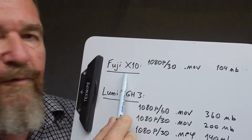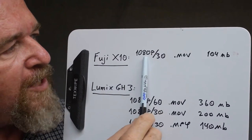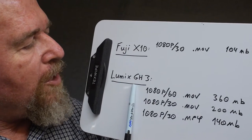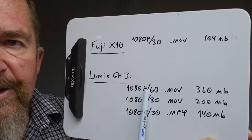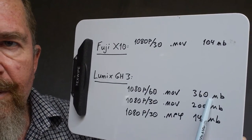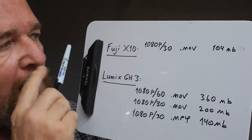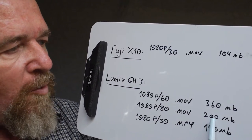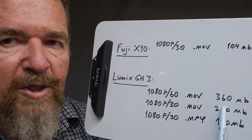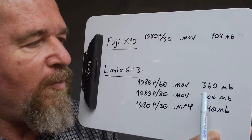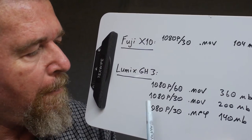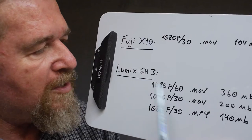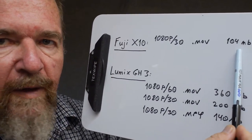First, the Fuji camera at 1080p 30 frames a second MOV — a minute of video was about 104 megabytes. The Panasonic Lumix GH3 in 1080p 60 frames a second MOV mode is shooting 360 megabytes a minute, which is over three times as much as the Fuji. In 1080p 30 MOV, which is in theory the same setting as the Fuji, it's almost twice as much memory as the Fuji, because of the higher bit rate of the Panasonic camera — it just has more data in those bits and bytes. Finally, I did 1080p 30 frames a second in MP4 format for the Lumix, and it was 140 megabytes, only about 40% more than the Fuji.